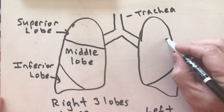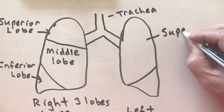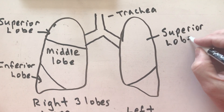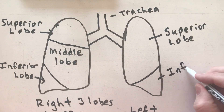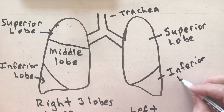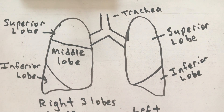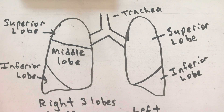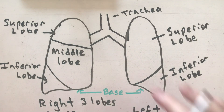On the left lung, I just have a superior lobe and an inferior lobe. At the bottom of each of these I have a base.